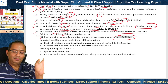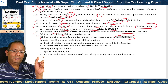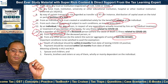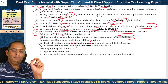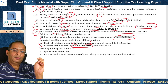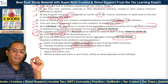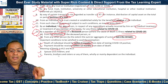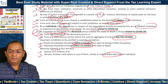For the exemption under serial number 13, two conditions must be satisfied: one, the death should be within 6 months from the date of testing COVID-19 positive; and two, the payment should be received within 12 months from the date of death. For the purposes of serial numbers 12 and 13, the meaning of 'family' is: either spouse and children of the individual, or parents, brothers and sisters or any of them, but if they are wholly or mainly dependent on the individual.